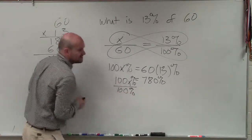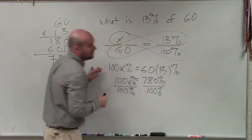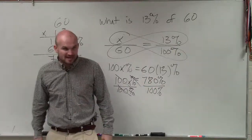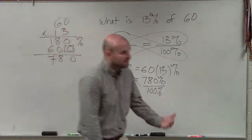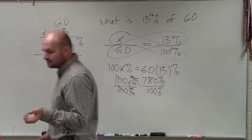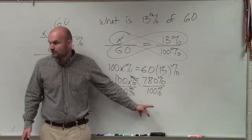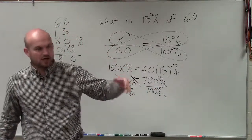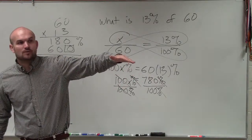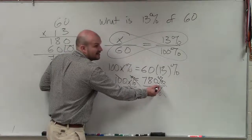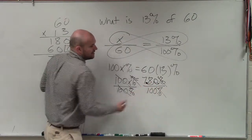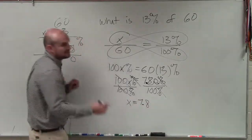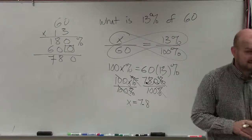Then I divide by 100% on both sides. It's very difficult when people are not writing this down. So I have 780% divided by 100%. For those of you in physics or chemistry who've dealt with units — when you have a unit divided by the same unit, they divide out. Dividing by 100 moves the decimal point over 2 places, so 780 becomes 7.8. Therefore, x equals 7.8. The percents have divided out, so it's not a percent.